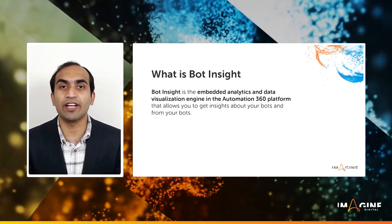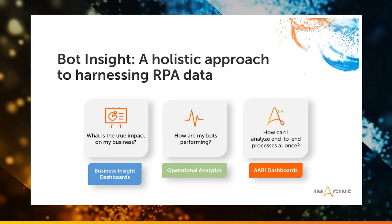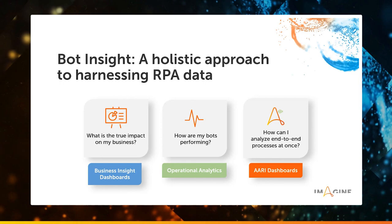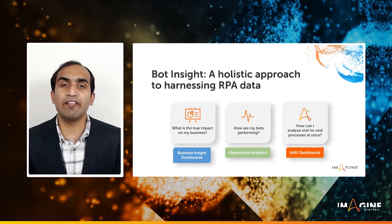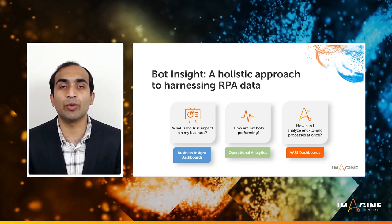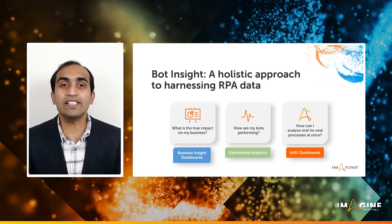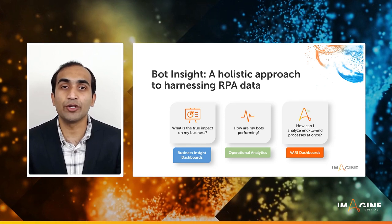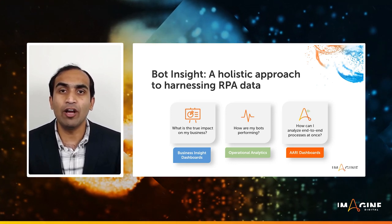Let's get deeper into measuring what matters. Bot Insight provides all the tools to look at a holistic view of RPA and intelligent automation data. To understand, manage, and optimize your business performance, you need insights from your business process. Nearly every process that the bot automates involves a lot of data. This data can easily be converted into insights — whether with just a single bot run — and it gets better over time. These insights can help identify trends that organizations can use to make business decisions. Similarly, to understand and optimize bot performance, you need operational analytics.